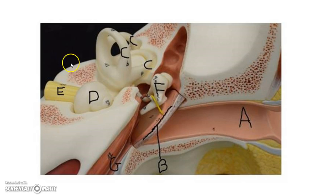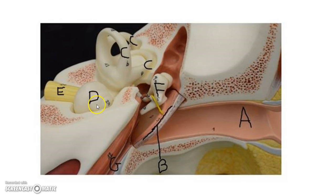The ear also has structures that help with balance. But first, let's talk about sensorineural deafness. Sensorineural deafness is when you get destruction of the hair cells within the cochlea. When those are destroyed, there's no way to convert mechanical movement into an action potential, so that is permanent hearing loss. A hearing aid will not help with that. It can happen at birth, from exposure to loud sounds, or with aging, and cannot be reversed or overcome with a hearing aid.